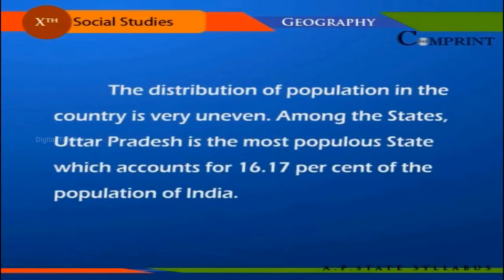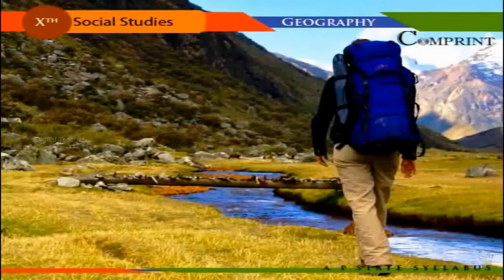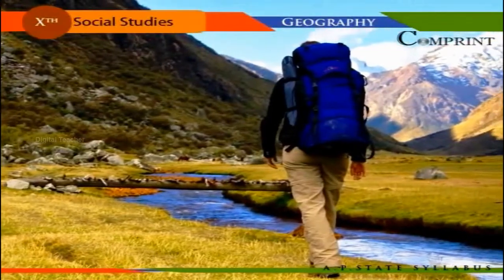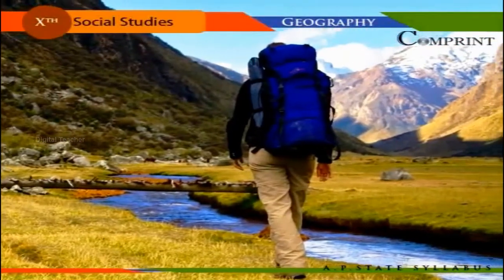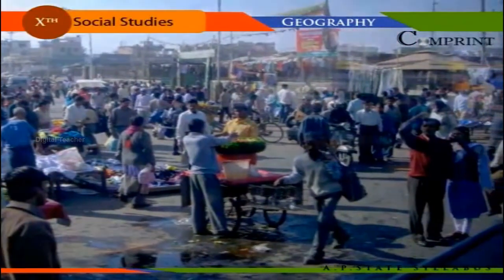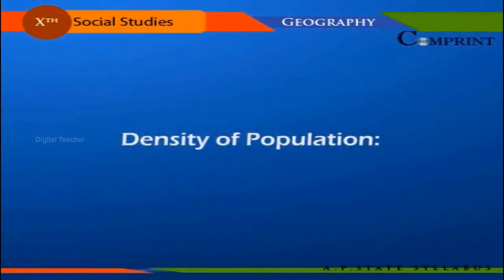The lowest population growth rate was in Kerala at 9.42%. The distribution of population in the country is very uneven among states. Uttar Pradesh is the most populous state, accounting for 16.17% of the total population, while Sikkim is the least populous with 0.05%. Among union territories, Delhi is the most populous while Lakshadweep is the least populous.